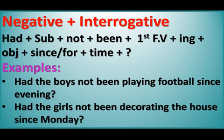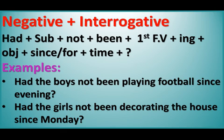For negative interrogative sentences of past perfect continuous tense, 'had' is at the beginning, then subject + not been + first form of verb with -ing + object + since/for + time + question mark. Examples: 'Had the boys not been playing football since evening?' 'Had the girls not been decorating the house since Monday?'